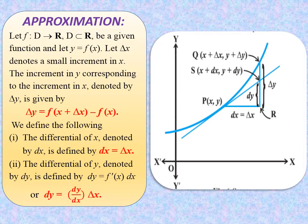Let f from D to R, where D is some subset of R, be a given function, and let y = f(x). Let delta x denote a small increment — that is, a small change in x. The increment in y corresponding to x: if x increases by delta x, then the corresponding increment in y is denoted by delta y. Then delta y is given by f(x + delta x) − f(x).